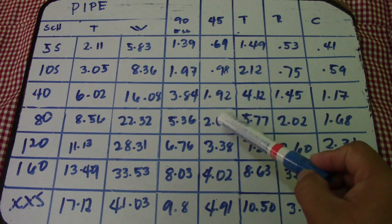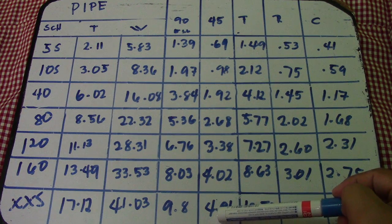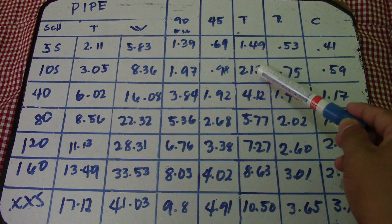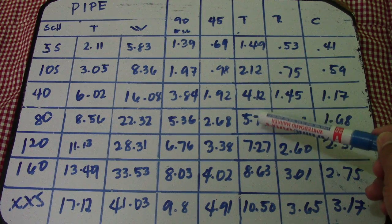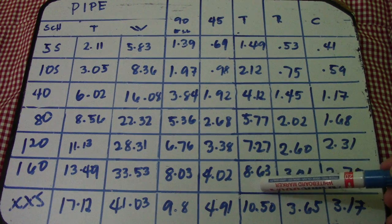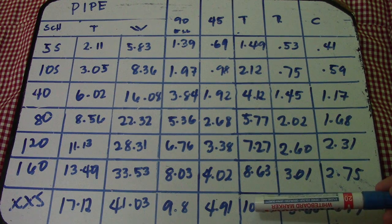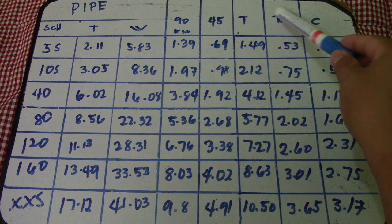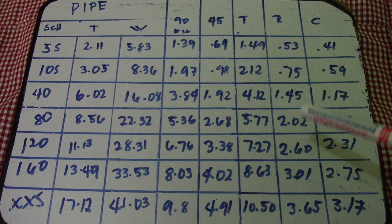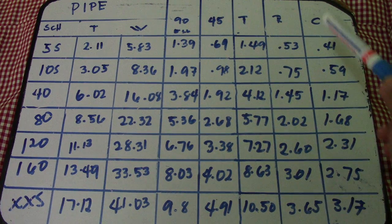1.92, 2.68, 3.38, 4.02, 4.91. Next is full T: 1.49, 2.12, 4.12, 5.77, 7.27, 8.63, and 10.50. Next is reducer: 0.53, 0.75, 1.45, 2.02, 2.60, 3.01, 3.65.